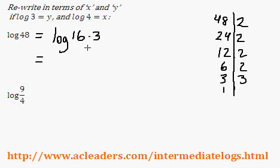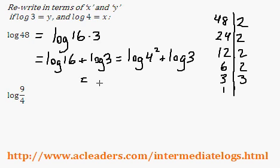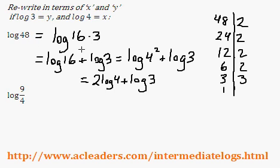So we have log(16 × 3), which breaks down into log 16 plus log 3. And 16 is of course 4 squared. By the way, there are different approaches to solving this — I'm just going through a basic approach. So log 4 squared is just 2 log 4 plus log 3. I wanted to break down log 48 into log 4's and log 3's, and I accomplished that.